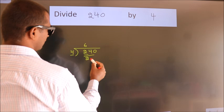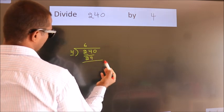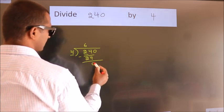4, 6, 24. Now we should subtract. We get 0.